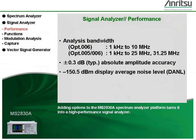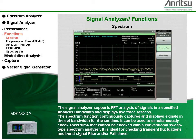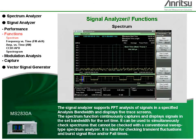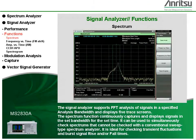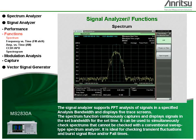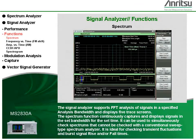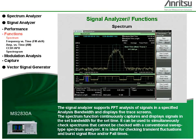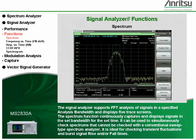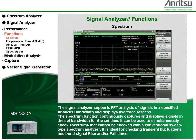Adding options to the MS2830A spectrum analyzer platform turns it into a high-performance signal analyzer. The signal analyzer supports FFT analysis of signals in a specified analysis bandwidth and displays five trace screens. The spectrum function continuously captures and displays signals in the set bandwidth for the set time. It can be used to simultaneously check spectrums that cannot be checked with a conventional sweep-type spectrum analyzer, and is ideal for checking transient fluctuations and burst signal rise and/or fall times.